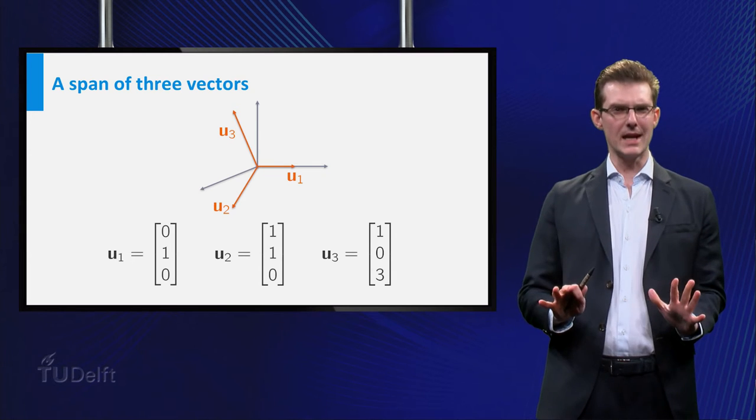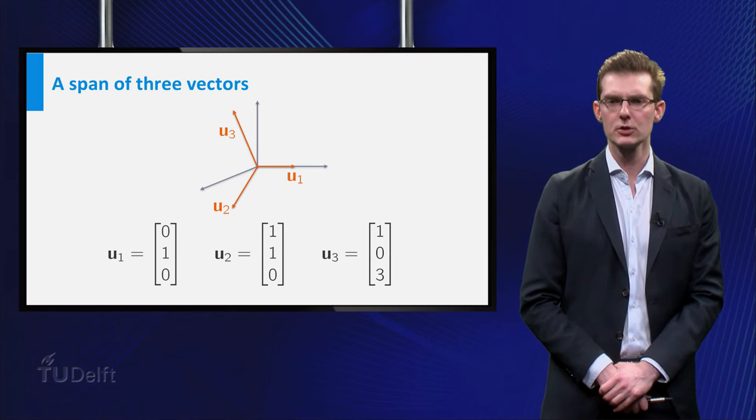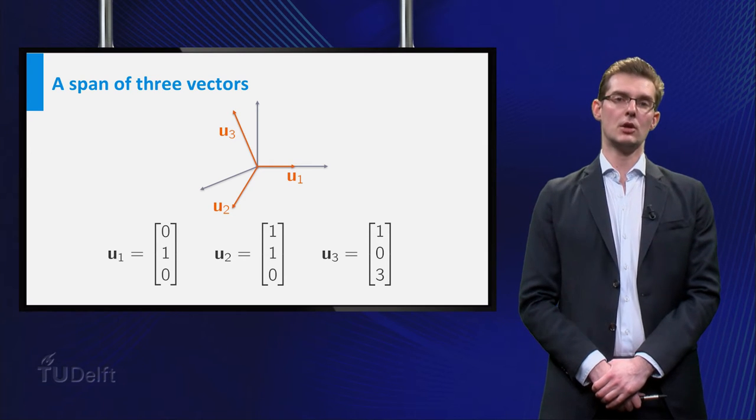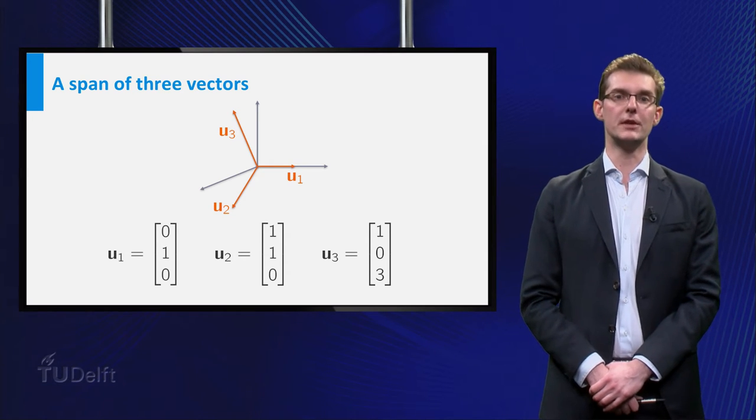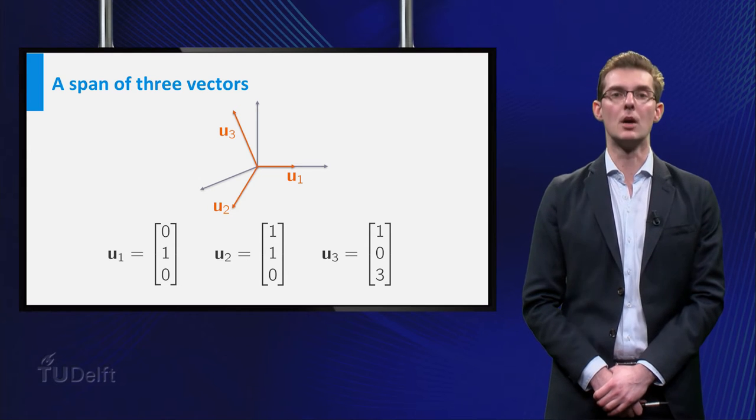Now is this always the case? Is the span of three vectors always the entire space? Of course it is not. The following vectors, V1, V2, and V3, are an example.